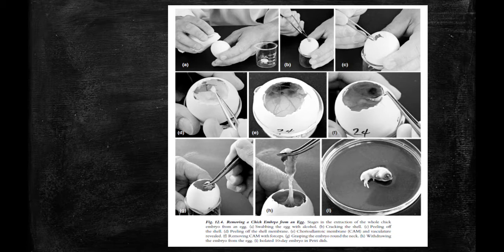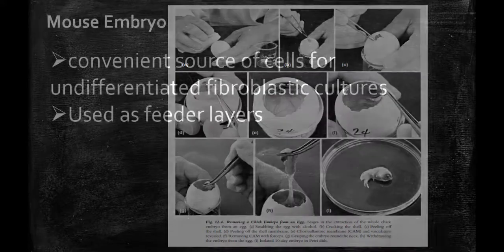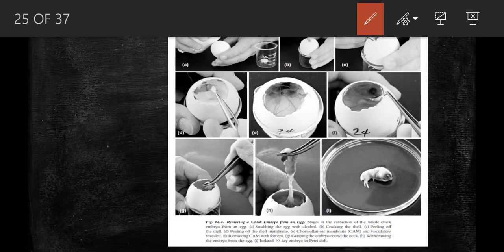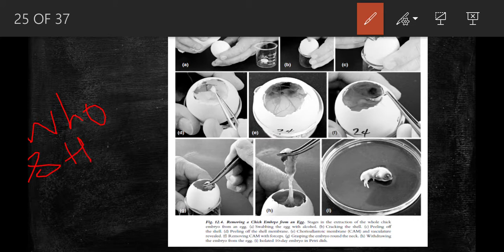The egg usually hatches at about 20 to 21 days. For a whole embryo you take an eighth day egg, and for organ rudiments you take an egg which is about 10 to 13 days.